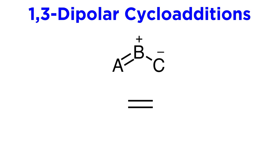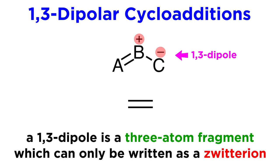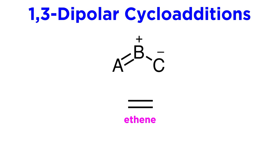With hetero-Diels-Alder reactions understood, it's time to look at an extension of this reaction called a 1,3-dipolar cycloaddition. This is where the diene is replaced by a 1,3-dipole — a three-atom fragment which can only be written as a zwitterion. We represent this in a general manner with A, B, and C, one pi bond, and formal positive and negative charges on B and C respectively. This can react with a standard dienophile such as ethene, undergoing a cycloaddition under thermal conditions to produce a five-membered ring.